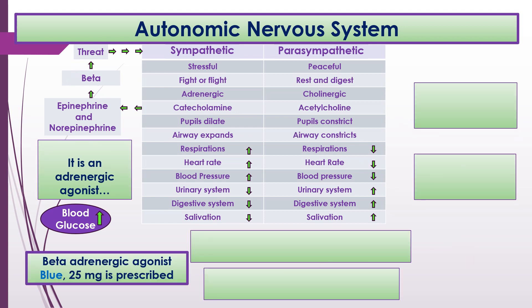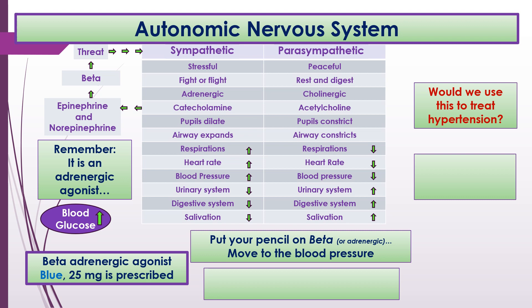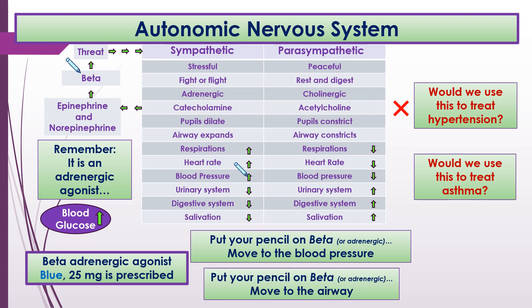Let's try this with another medication — the beta adrenergic agonist blue 25 milligrams. An agonist helps the system do whatever it does. Would we use it to treat hypertension? Put your pencil on beta or adrenergic and move to blood pressure — the blood pressure goes up, so no. Would we use it to treat asthma? Move to the airway — the airway expands, so yes, we would use that medication to treat asthma.